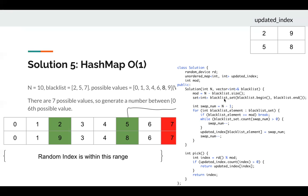In the constructor, we maintain a blacklist set so we can check if a number is in the blacklist when searching for a good swap number. There's a while loop to find the next valid swap number, then we place it into our index map. The pick function is O(1). That's it — see you next time.